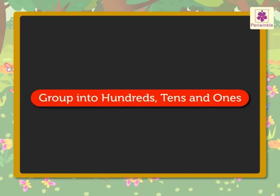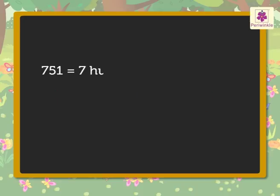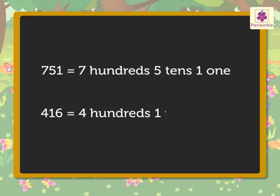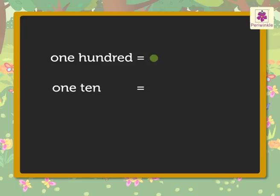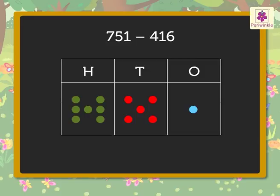So, let us group both these numbers into hundreds, tens and ones and then subtract them. Thus, there are 7 hundreds, 5 tens and 1 one colourful butterflies and 4 hundreds, 1 tens and 6 ones that flew away. Let us represent each hundred with a green dot, each ten with a red dot and each one with a blue dot. So, the number 751 will be represented like this with dots.